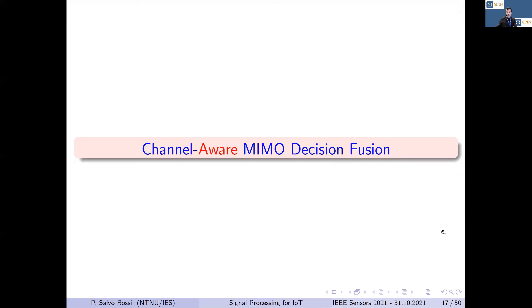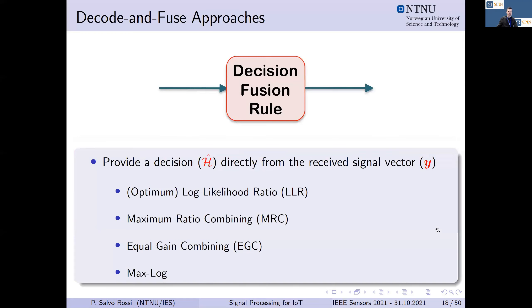We start with channel-aware MIMO decision fusion, meaning the case where the fusion center has instantaneous channel state information and knows the exact realization of the reporting channel. In this case, there are two main approaches to decision fusion design. One is called the decode-and-fuse approach, in which the received information Y is processed directly to obtain an estimate of the source state. In this approach, we present log-likelihood ratio, maximum ratio combining, equal gain combining, and max-log rules.